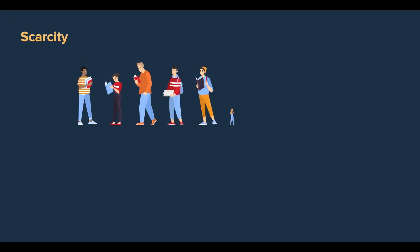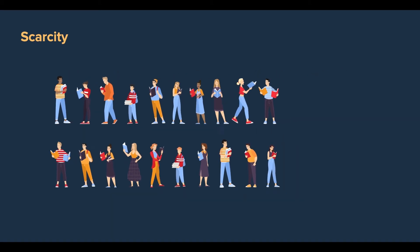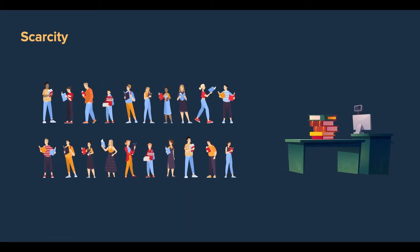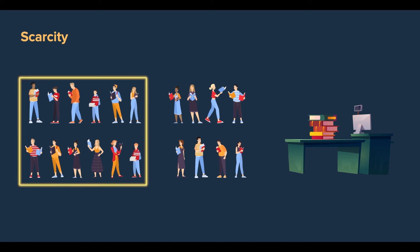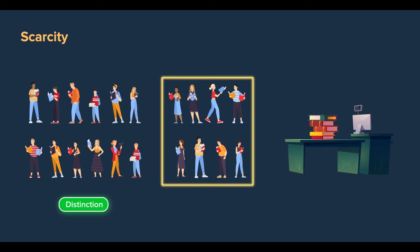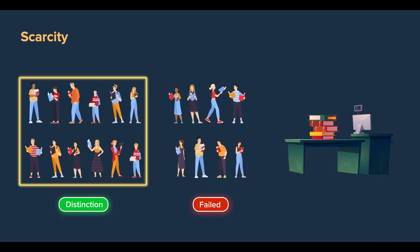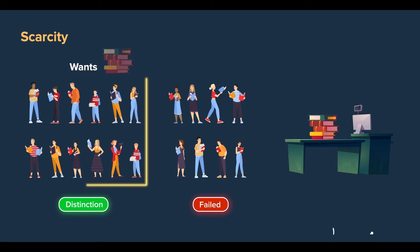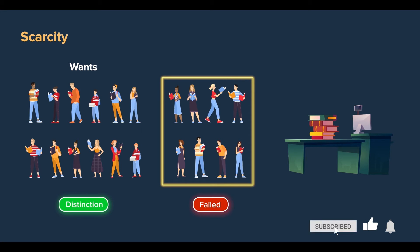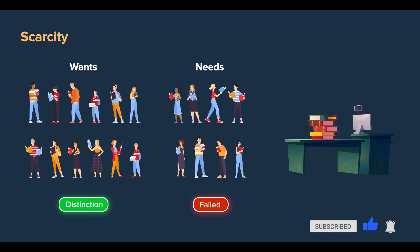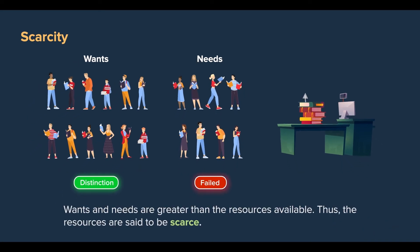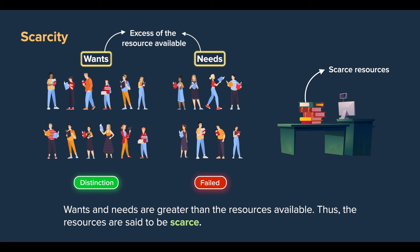Let's say there are 20 students in your economics class, but there are only five economics books in your library. Out of the 20 students, 12 scored distinctions while the other eight have consistently failed. Now, all 20 students want to borrow the books today. The 12 students who scored distinctions have a want for the books, whereas the eight students who are failing have a real need for it. Because there are only five books, the books are our scarce resources, since the wants and needs are in excess of the resources available.